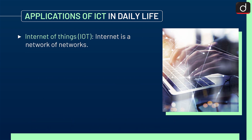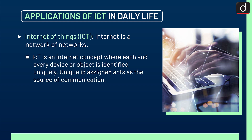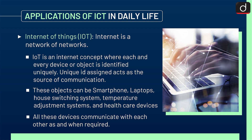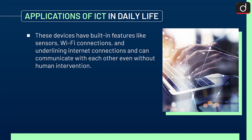Next is the Internet of Things, or IoT. The internet is a network of networks. IoT is an internet concept where each and every device or object is identified uniquely. The unique ID assigned acts as the source of communication. These objects can be smartphones, laptops, house switching systems, temperature adjustment systems and healthcare devices. All these devices communicate with each other as and when required, and have built-in features like sensors, Wi-Fi connections and underlying internet connections, enabling communication even without human intervention.